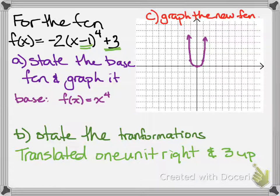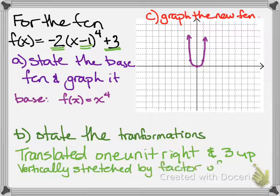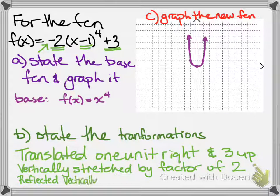So now is there a stretch or compression? Well the 2 tells us that there's a vertical stretch by a factor of 2 and there's also a negative there and that negative tells us that it's reflected vertically or you can say across the x-axis.